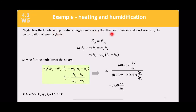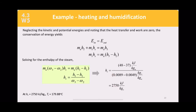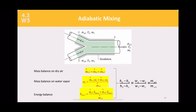Applying conservation of energy for the humidification section (no heat transfer, no work): m_a·h2 + m_s·h_s = m_a·h3. Solving for enthalpy of the steam: h_s = (h3 - h2) / (ω3 - ω2) = 2750 kJ/kg of water vapor. From steam tables at h_s = 2750 kJ/kg, the saturation temperature of the injected steam is T_sat = 179.88°C.